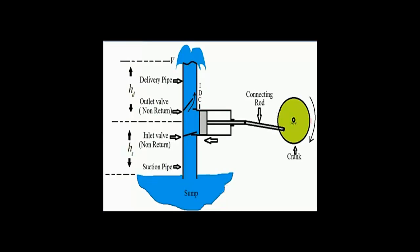In the second stroke, the crank rotates from 180 degrees to 360 degrees — that is the delivery stroke. The piston moves from outer dead center to inner dead center. At that time the delivery valve is opened and the suction valve is closed, and water which is filled inside the cylinder is delivered to the reservoir through the delivery pipe.